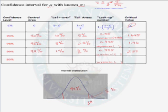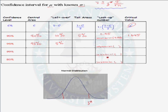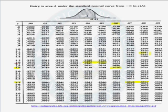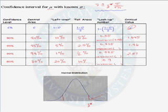The last confidence interval we want to do is the 80% confidence interval. We want our central area to be 80%, that leaves 20% in the two tails, that leaves 10% in the upper tail, which means we want to look up 0.9 in the body of our table — the 90th percentile. From our table, the 90th percentile corresponds to a z-value of 1.28.